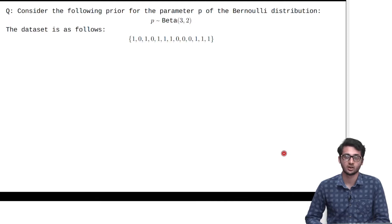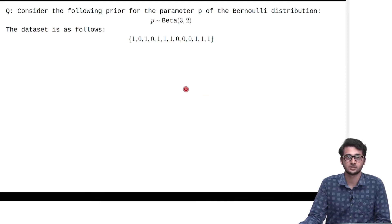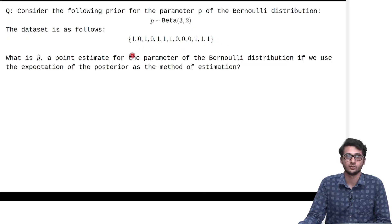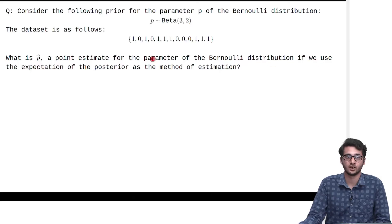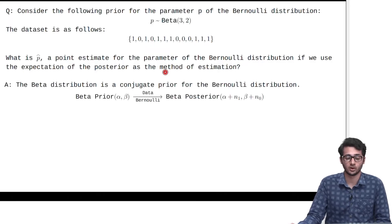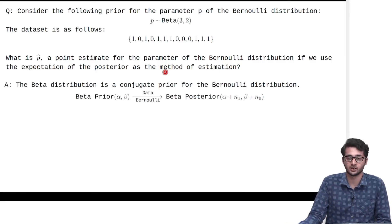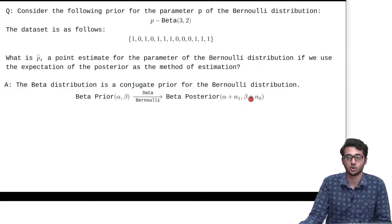We will now look at a numerical on Bayesian estimation. We have a problem where we are given a Beta prior with alpha value 3 and beta value 2, along with a given dataset. We need to find a point estimate for the parameter p of the Bernoulli distribution, using the expectation of the posterior as our method of estimation. The Beta distribution is the conjugate prior for the Bernoulli distribution.